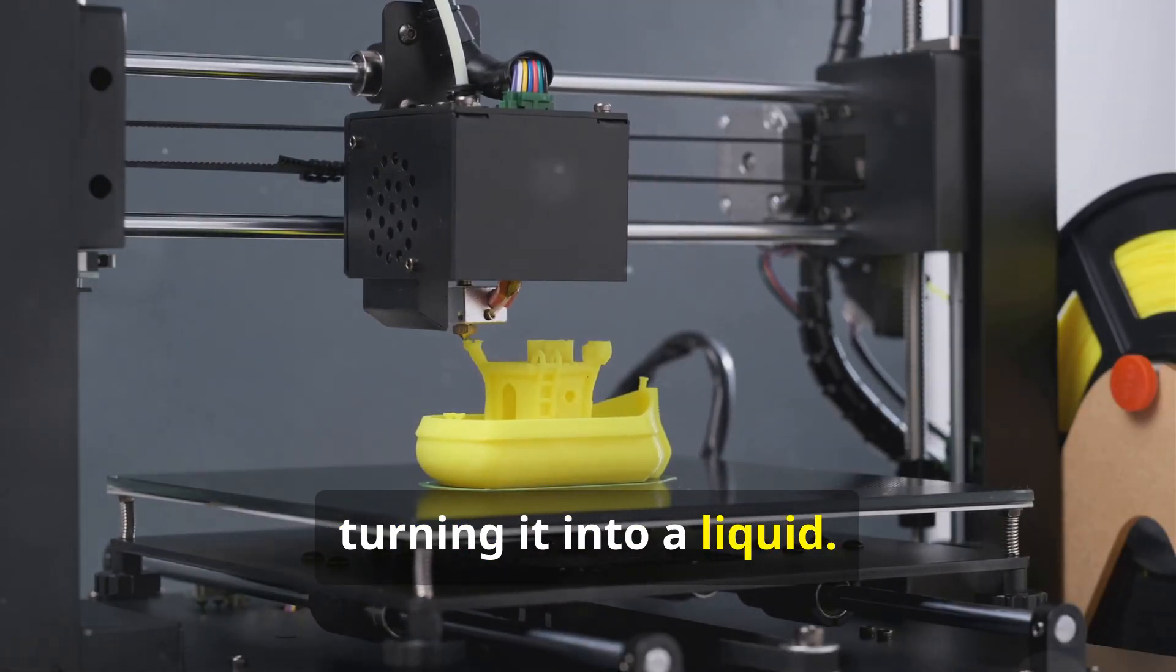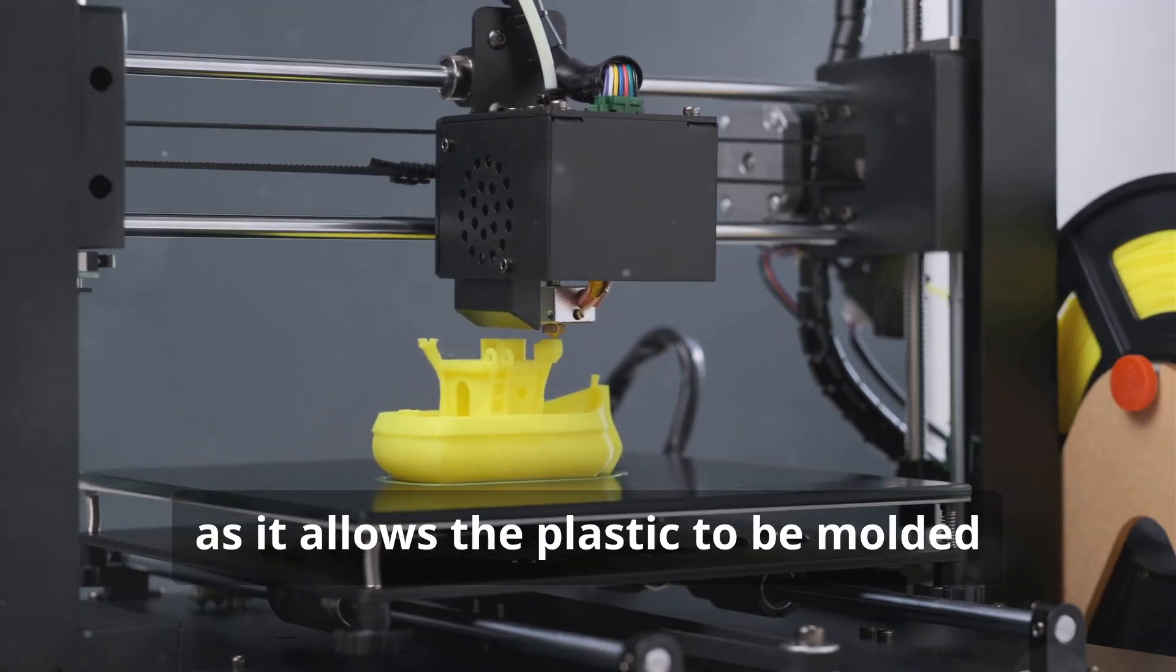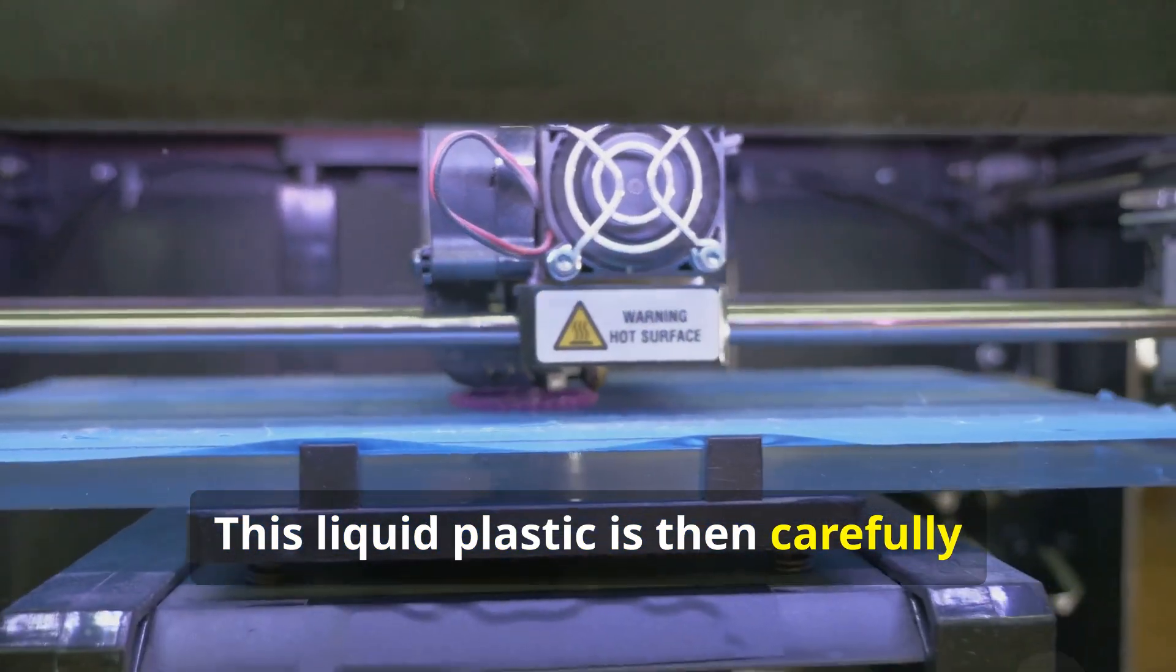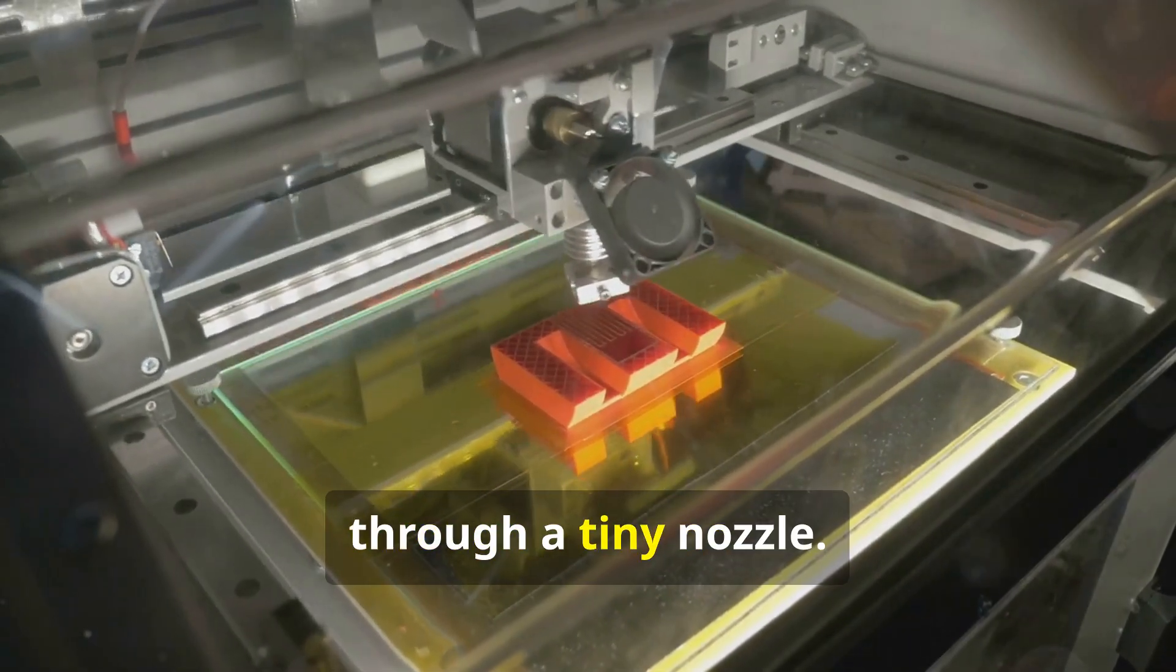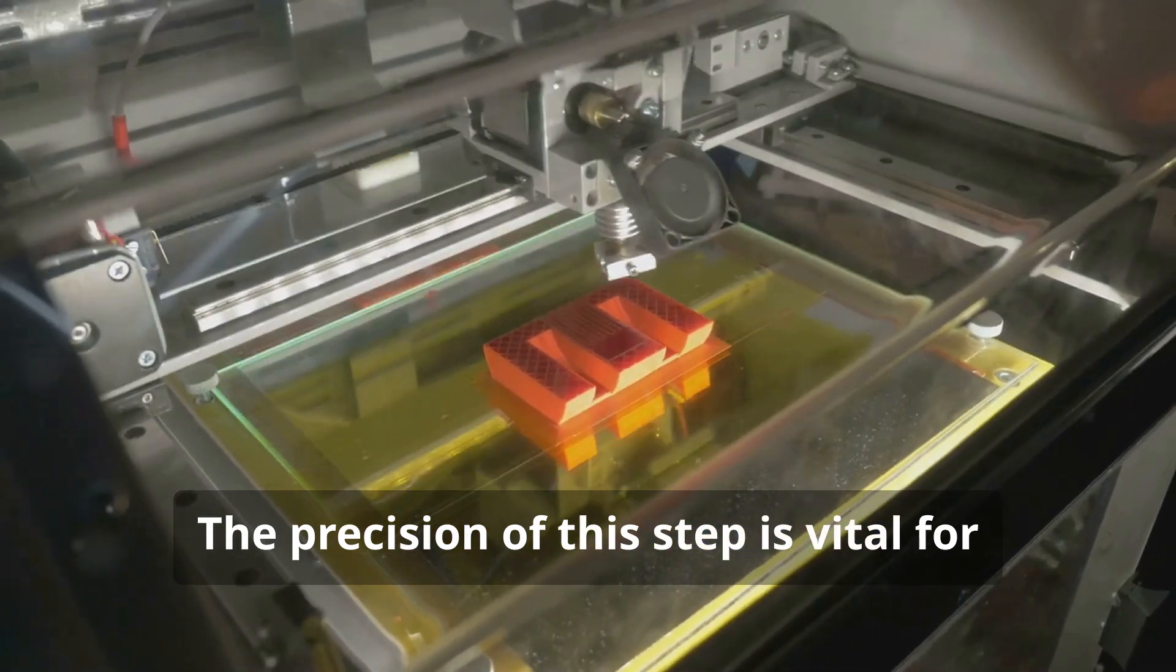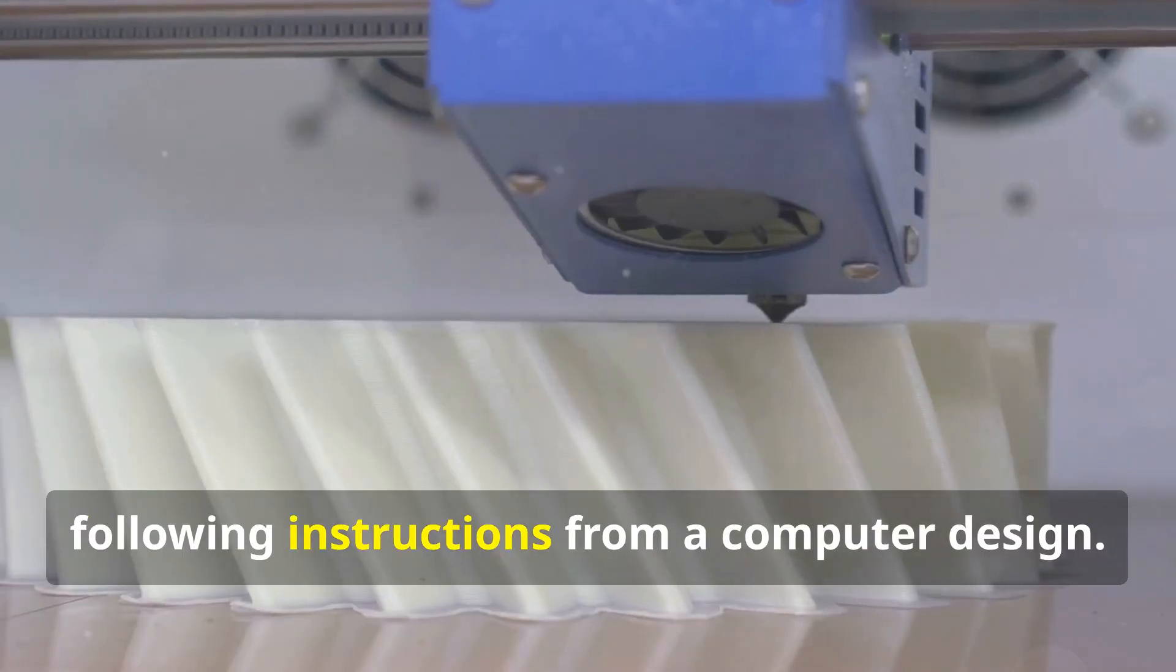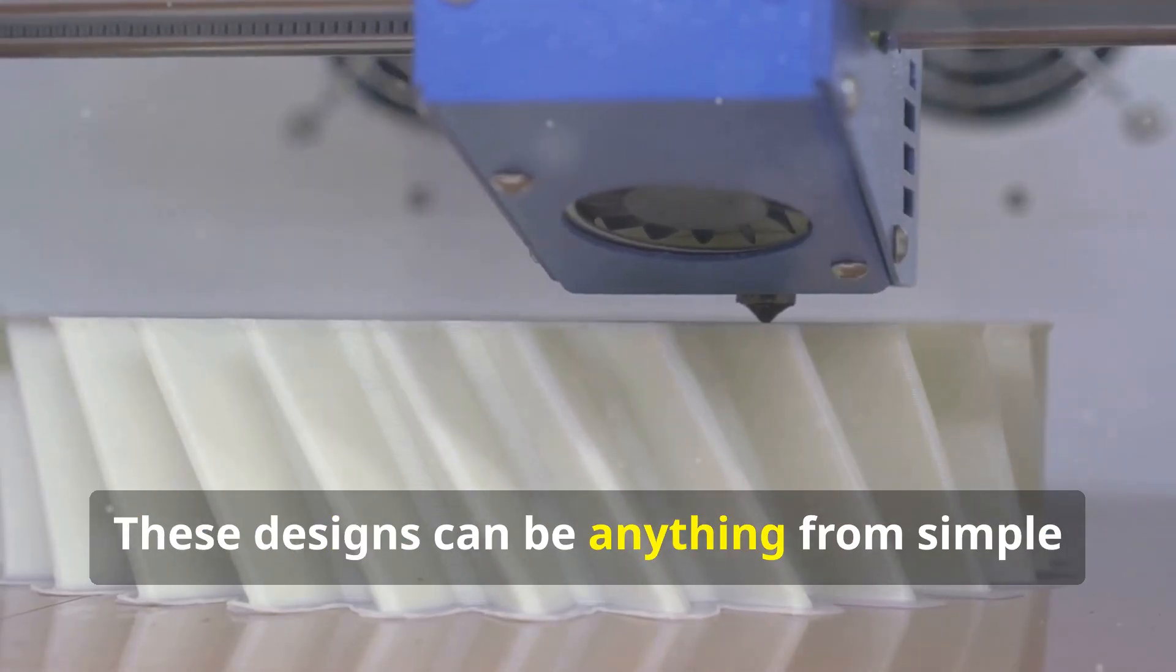This process is crucial as it allows the plastic to be molded into any shape. This liquid plastic is then carefully squeezed out, or extruded, through a tiny nozzle. The precision of this step is vital for creating detailed objects. The nozzle moves precisely following instructions from a computer design. These designs can be anything from simple shapes to complex structures.